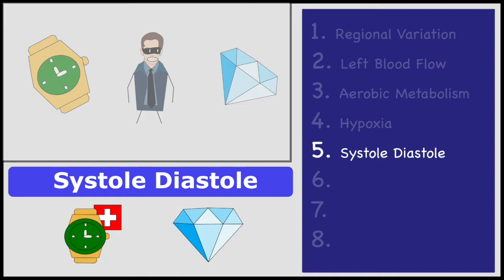Systole-diastole is the next feature. Coronary blood flow fluctuates during different phases of the cardiac cycle. During systole, the coronary blood flow is minimum and during diastole it is maximum.